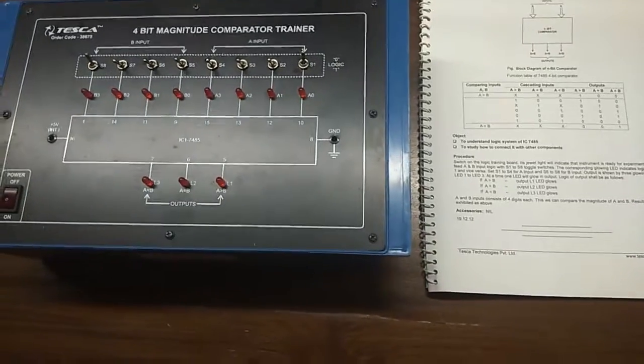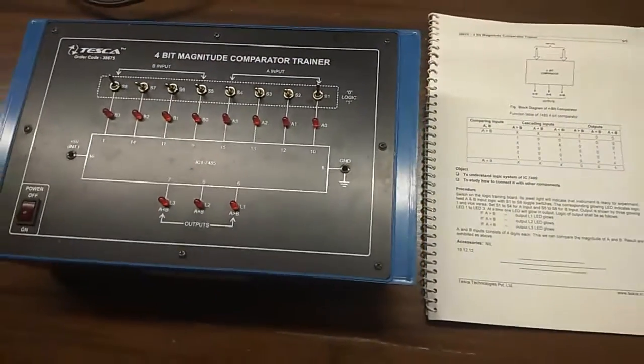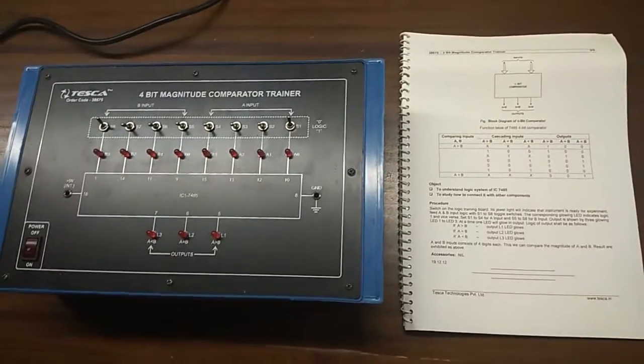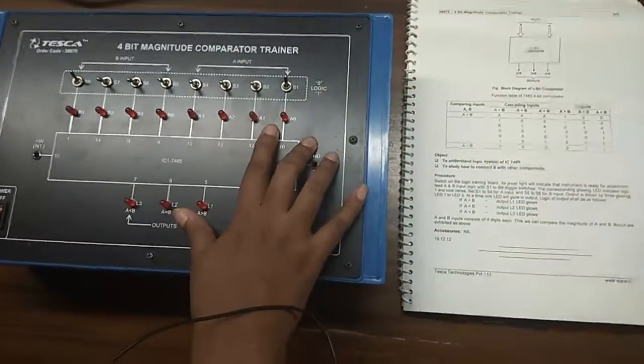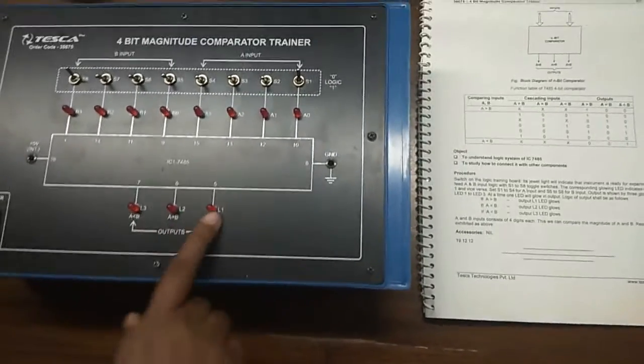The objective of this trainer kit is to understand the logic system of IC 7485. We will give different combinations of inputs A and B and compare the results.